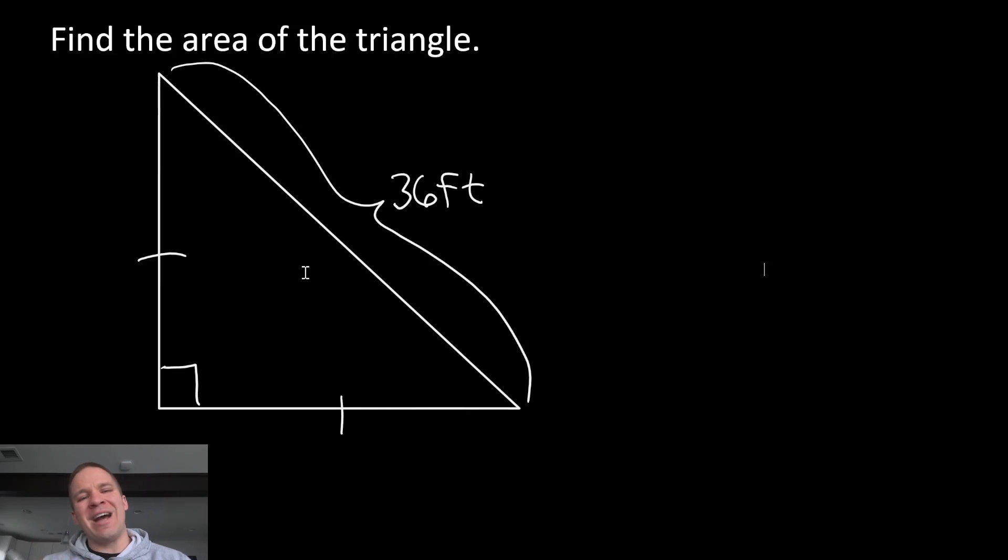What's going on, Mr. Allen here. We're gonna find the area of this triangle. So I've got a right triangle with two congruent legs there, so it's an isosceles right triangle. I have the hypotenuse as 36 feet.